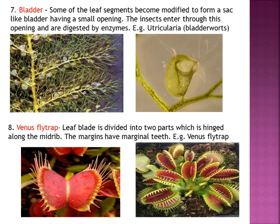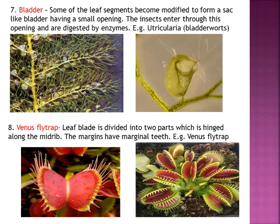Next we have the bladder in Utricularia, also known as bladderwort. Some segments of the leaf form bladders — sac-like structures with an opening. Insects enter through the small opening and are digested by enzymes inside the bladder. Utricularia is an aquatic plant present mainly in water; most of the plant is underwater, with the upper part above water to trap insects.